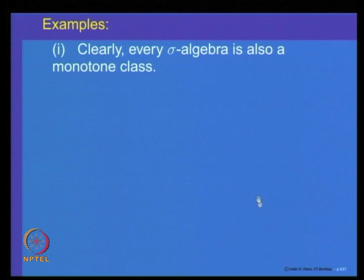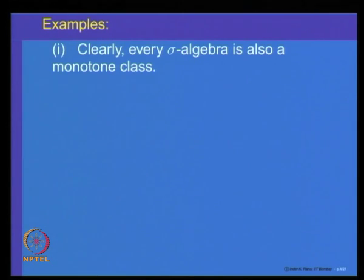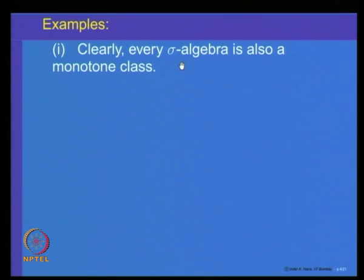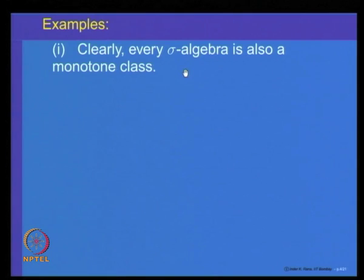Every sigma algebra is also a monotone class. A sigma algebra is closed under countable unions, so it is also closed under increasing unions — the first property holds. For the second property, if a sequence A_n is decreasing in a sigma algebra, the complements form an increasing sequence. Since a sigma algebra is closed under complements and countable unions, the union of complements belongs to it, which means the intersection of the A_n belongs to it as well.